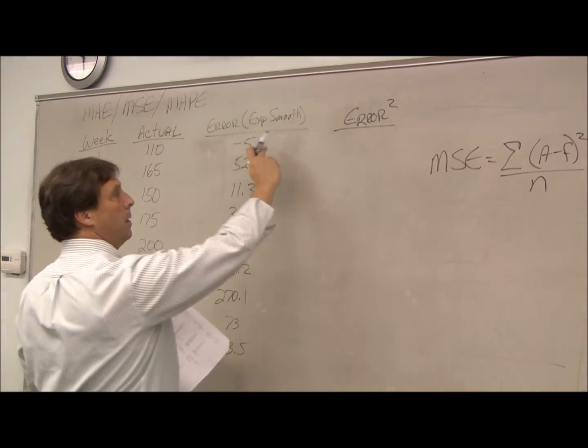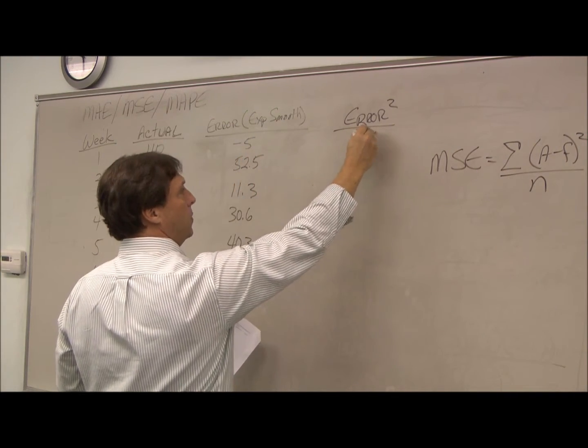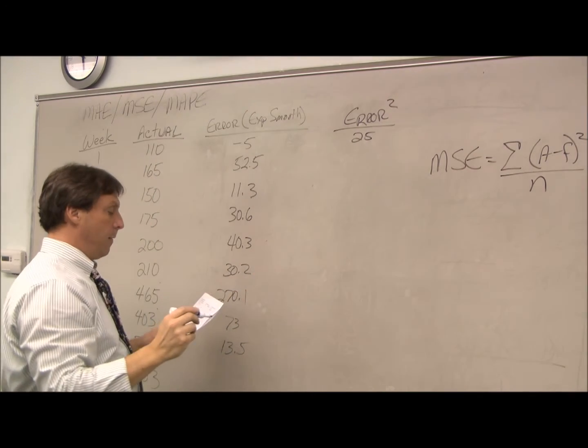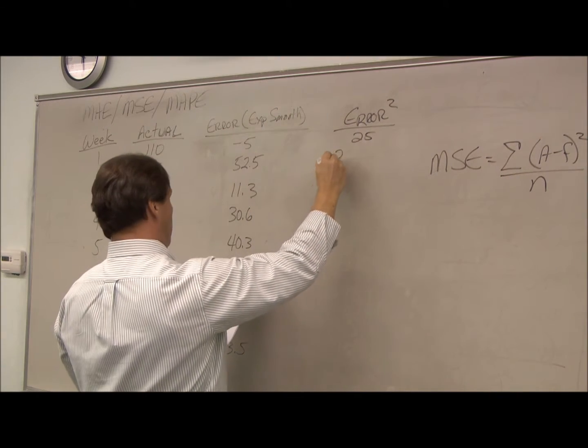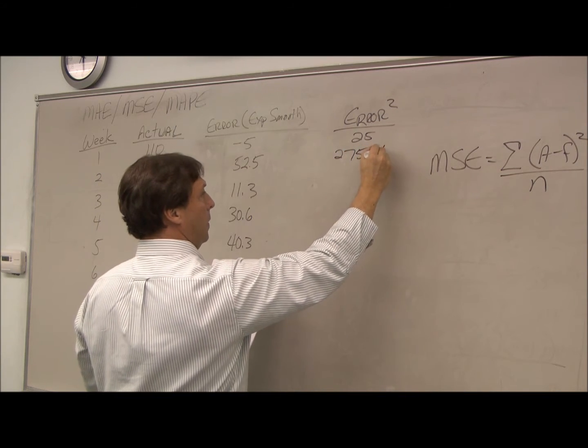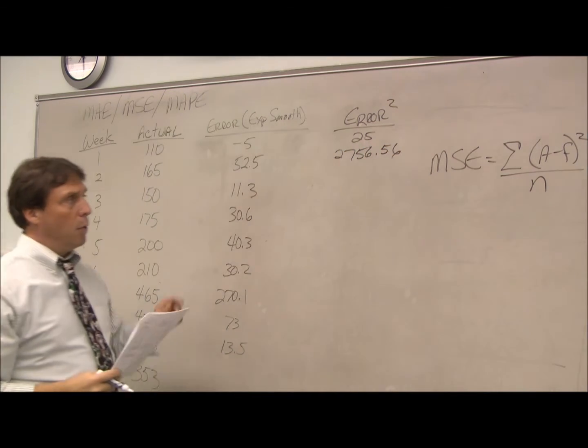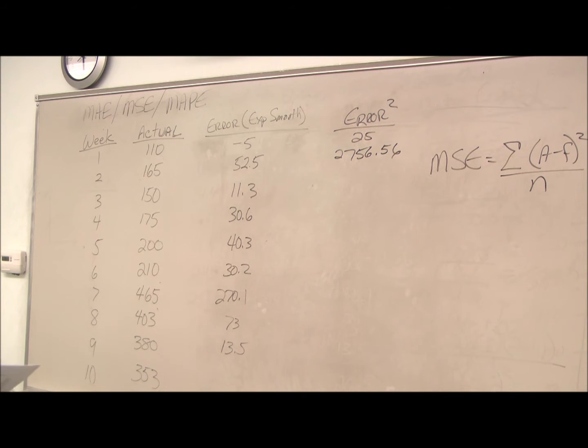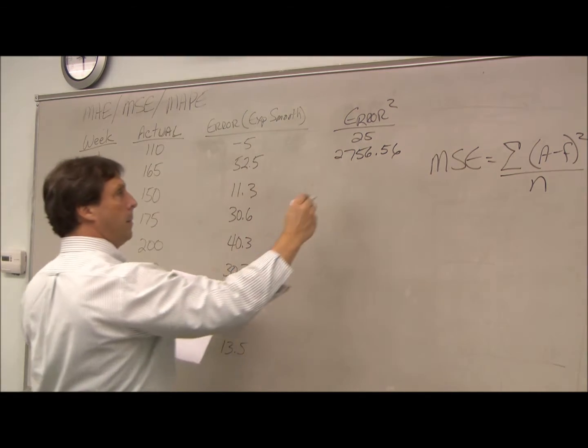So all we do is 5 times 5 is 25, 52 times 52 is 2,756.56. We just go through and we calculate the squares of all of our errors.